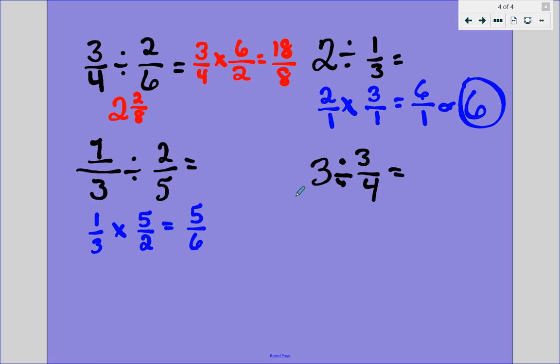How about 3 divided by 3 fourths? We take the 3 and we're going to make it 3 over 1 just to make it a fraction. The division becomes multiplication. And the reciprocal, not 3 fourths, but 4 thirds. 4 goes on top and the 3 goes on the bottom. 3 times 4 is 12. 1 times 3 is 3. And 12 thirds is the same as 12 divided by 3 or 4.